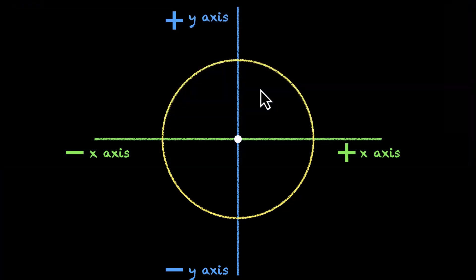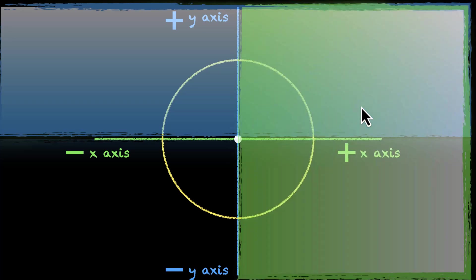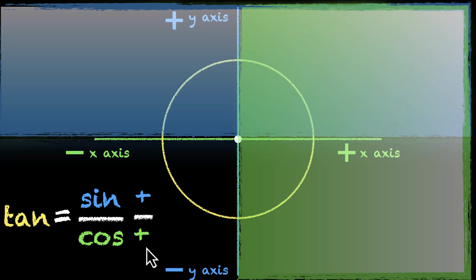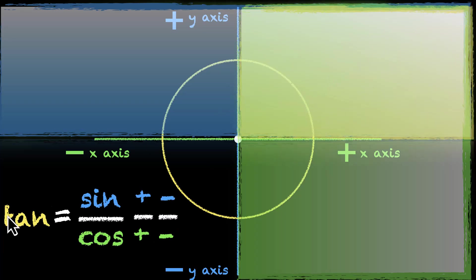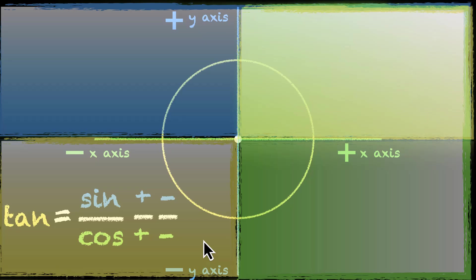We're left with tan and cot. Pause the video and think about where tan and cot are positive. Tan is sine divided by cos, so we need both sine and cos. To make tan positive, either we have positive divided by positive, which makes it positive, or negative divided by negative, which also makes it positive. Where do we have both sine and cos positive? That's the first quadrant — so this is where tan is positive. But there's one more quadrant: the third, where both sine and cos are negative, and negative divided by negative is positive. So in the third quadrant, tan is also positive. So we have two quadrants for sine: first and second. Two quadrants for cos: first and fourth. And two quadrants for tan: first and third.